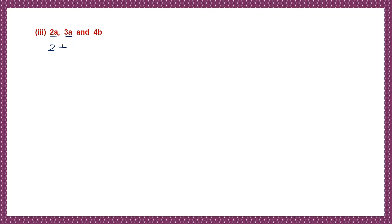Question 3: we have 2A, 3A, and 4B. As you can see, 2A and 3A are like terms, and 4B is unlike. So we cannot add unlike terms. First let's add the like terms: 2 plus 3A and 4B, so that is plus 4B. So 2 plus 3 is 5A plus 4B. That is our answer, 5A plus 4B.